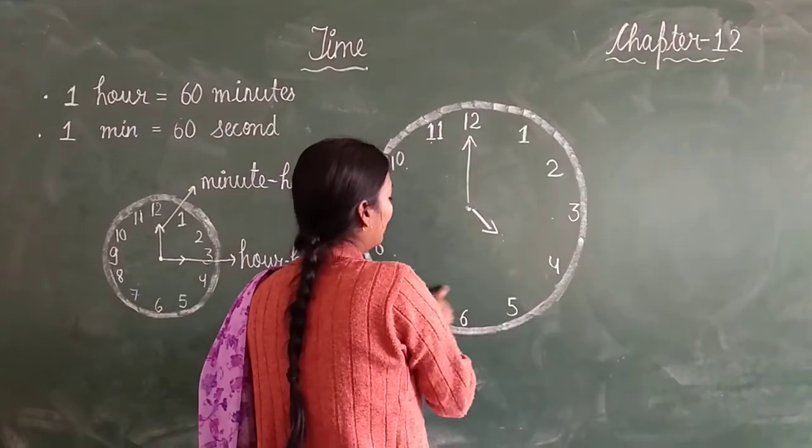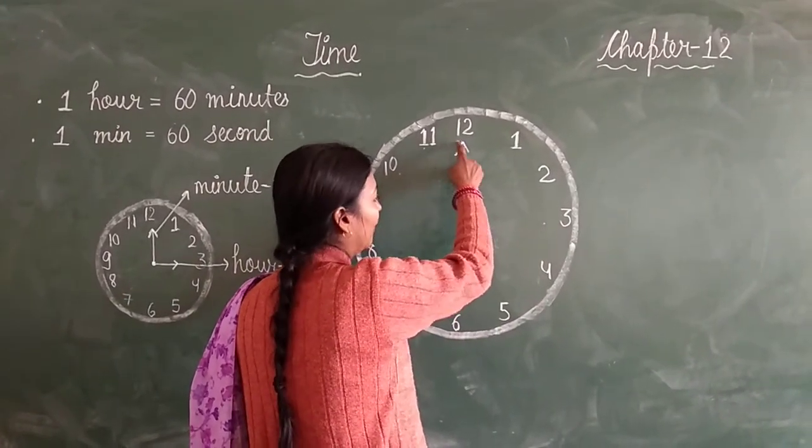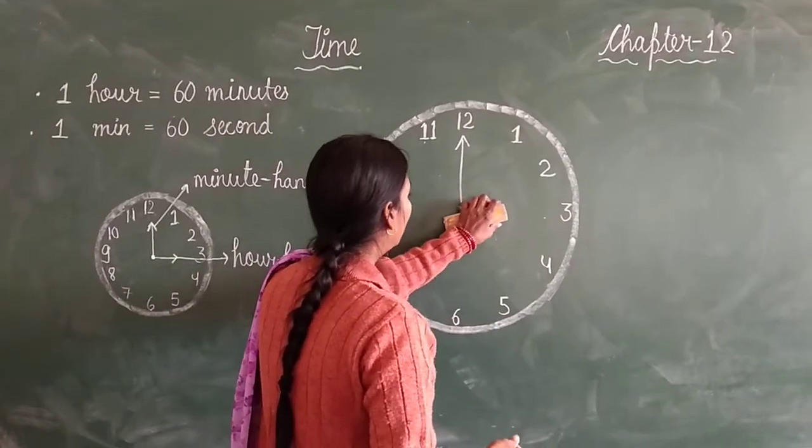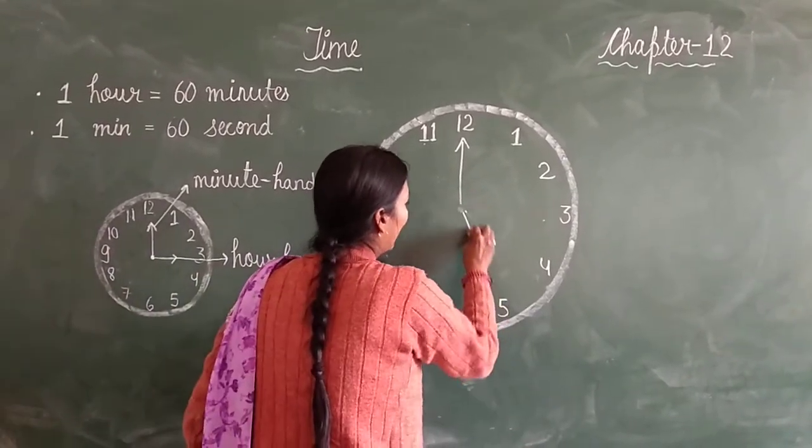This runs full time, then comes to 12. Then your short hand is going to change to 5.